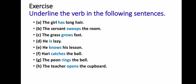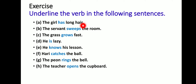Now let's proceed to Chapter 12: Verbs — Recapitulation. The exercise is to underline the verb in the following sentences. A verb is a doing word — it describes the action we are doing. For example: 'The girl has long hair' — 'has' is also a verb. 'The servant sweeps the room' — 'sweeps' (from 'sweep') is the verb.